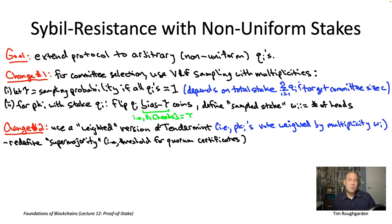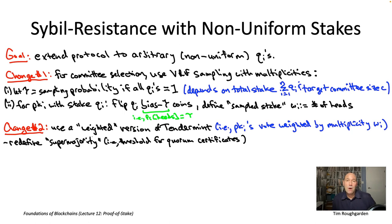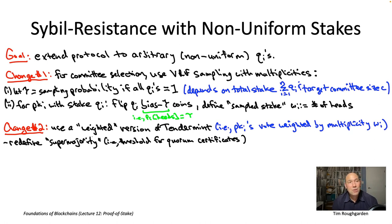Suppose you have a total voting weight of 75, counting multiplicities, all in favor of one particular block. Do you consider that a supermajority—a quorum certificate—or not? The obvious answer would be to demand more than two-thirds of the overall voting power of the committee, meaning the total sampled stake among committee members. The problem is that a participant in this protocol doesn't actually know the total voting weight of the committee—they only know a lower bound based on votes received.